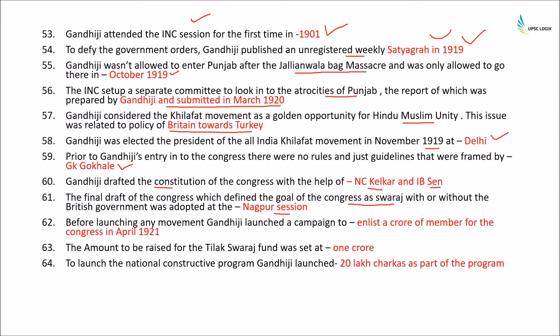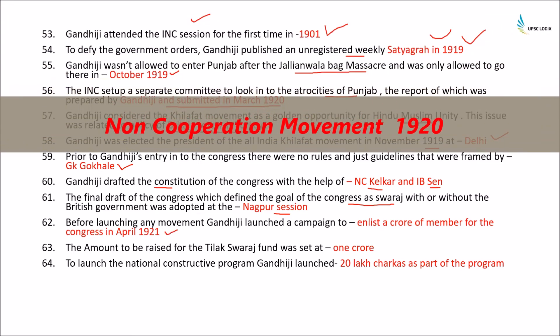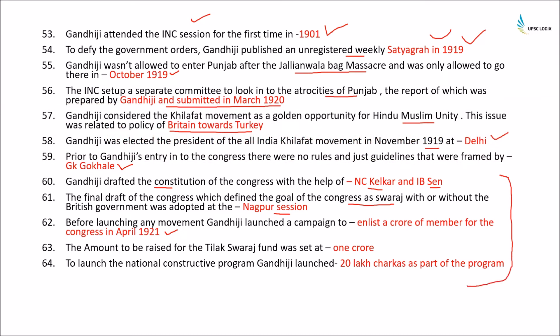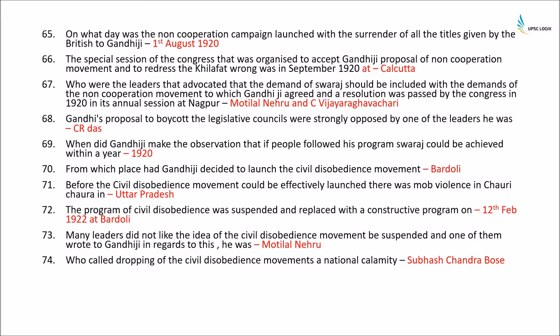Before launching the movement, Gandhiji launched a campaign to enlist one crore members in the Congress in April 1921, as part of the non-cooperation movement. The amount raised for the Tilak Swaraj Fund was one crore, and Gandhiji launched 20 lakh charkhas as part of a national constructive program. The non-cooperation movement was launched with the surrender of all titles given by the British to Gandhiji on 1st August 1920, which was also the date the Khilafat movement decided to launch non-cooperation. In true earnest, the non-cooperation movement started from 1st January 1921.